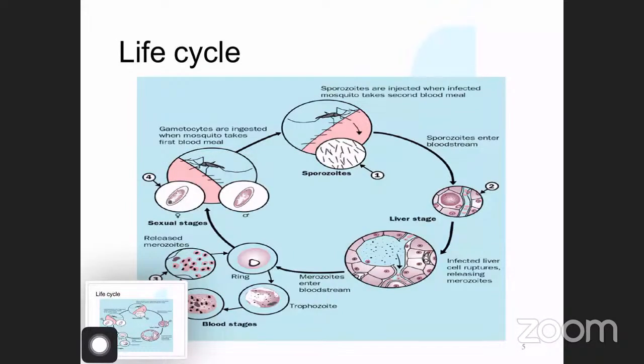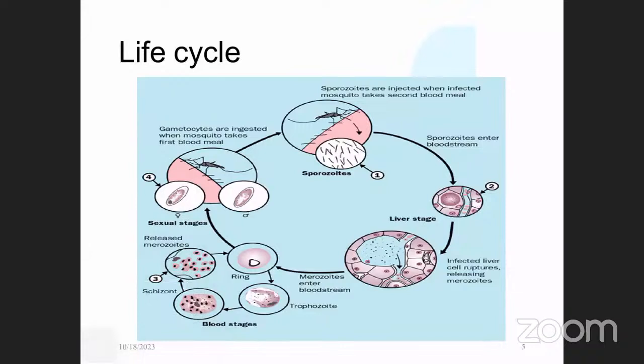The merozoites are released from the liver back into the blood, where they undergo another transformation into different forms called trophozoites and gametocytes. The gametocytes cannot continue development in the human body — they need the female Anopheles mosquito to continue to grow. So when a female Anopheles mosquito bites someone, it ingests gametocytes and carries them back into its body.